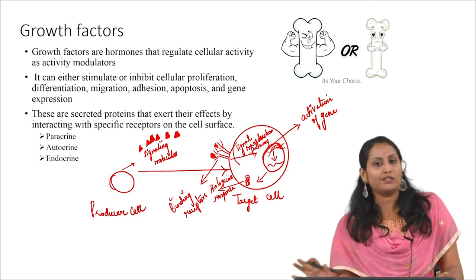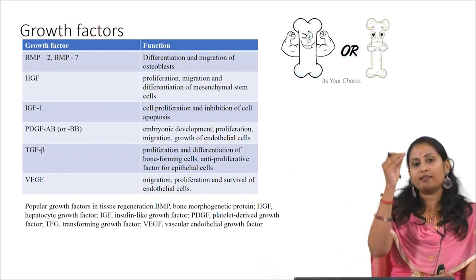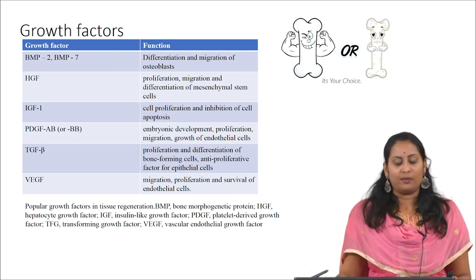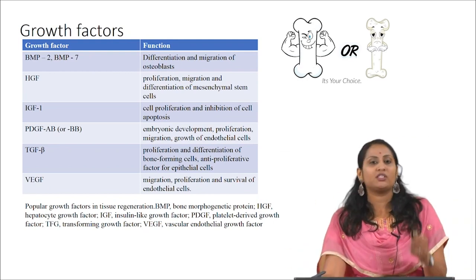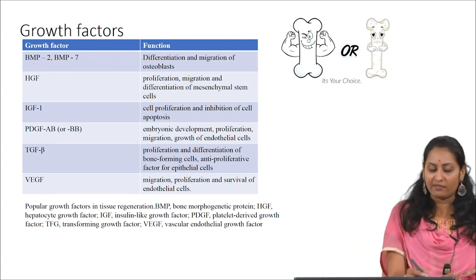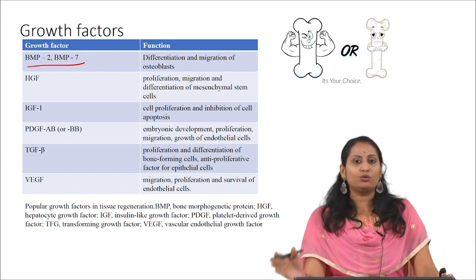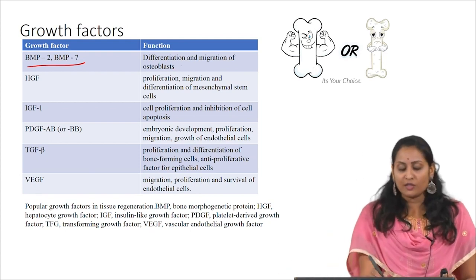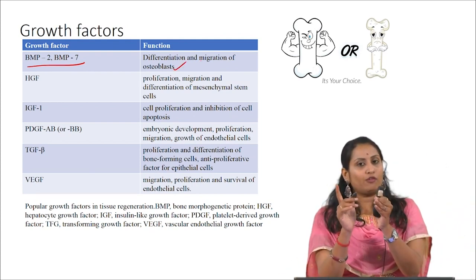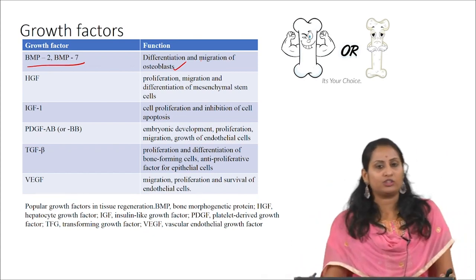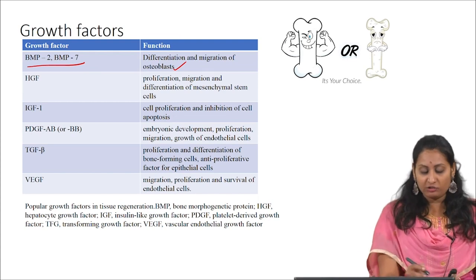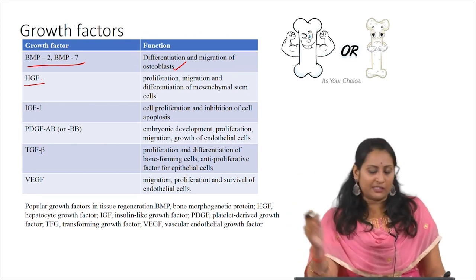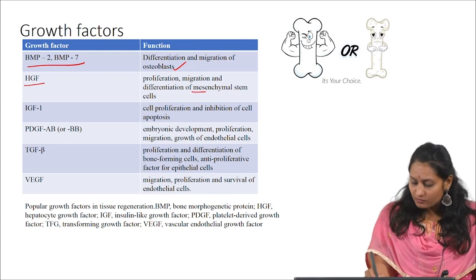This is all about growth factor signaling. This table shows certain growth factors responsible in bone tissue engineering. BMP-2 and BMP-7 — bone morphogenetic proteins 2 and 7 — are FDA-approved growth factors used in commercially available products, helping in the differentiation and migration of osteoblast cells. HGF, hepatocyte growth factor, promotes proliferation, migration, and differentiation of mesenchymal stem cells.